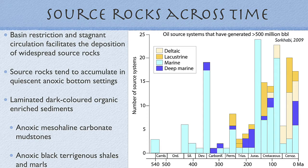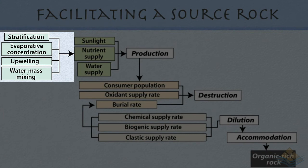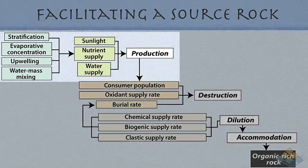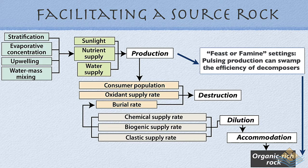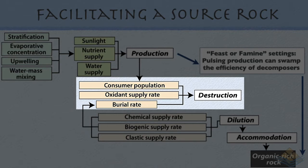There are a number of reasons for this. Evaporitic settings tend to be prone to stratification and water mixing, and in periods of flooding and freshening — a combination of ongoing sunlight, enhanced nutrient supply, and influxes of freshening into the system — we see feast or famine associations in the depositional setting. That pulsing production will tend to swamp the efficiency of the decomposers that would otherwise consume the organic material. That organic matter produced in near-surface waters then has to pass through the gauntlet of consumers.